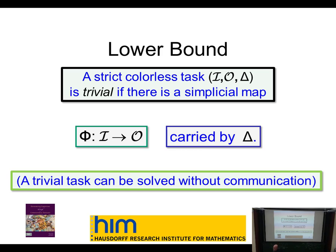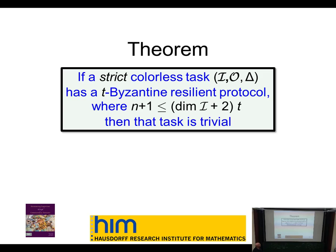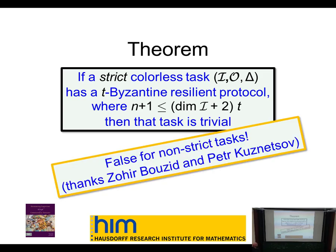The final question is: what can you do if you don't satisfy this dimensional restriction — if you have too many bad guys? The answer is almost nothing. If it's strict (satisfying that condition), the only tasks you can solve are ones that require no communication. You can't figure out what any inputs are. If it's non-strict, there are non-trivial tasks that can be solved — some friends of ours found weird tasks of the form 'pick some subset of values where a valid value exists even though you can never figure out which one,' and these can actually be solved even with more Byzantine processes.